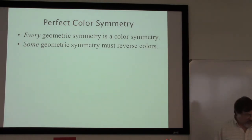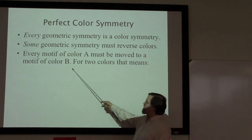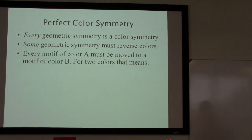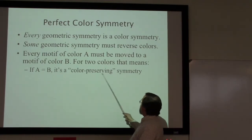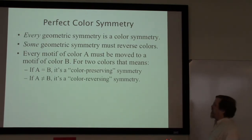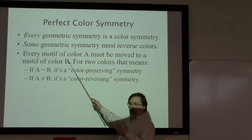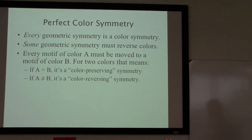What this ends up meaning is that every motif of color A must be moved to a motif of color B, where A and B might be the same or different. When we only have two colors: if A equals B, so all the greens move to other greens, we have a color preserving symmetry. On the other hand, if A is not equal to B — say green and blue — then all the green ones go to blue and all the blues must go to greens as well. That would be a color reversing symmetry. In both cases we refer to that as a color symmetry.